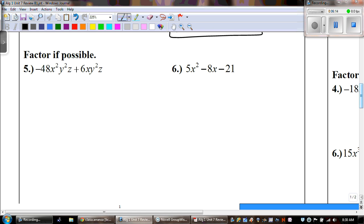Number 5 and 6. The directions say to factor if possible. So, let's first look at the numbers. Negative 48 and 6. Is there a number that goes into both of those? There is. It's 6. Now, the only thing that I have to watch out for is my leading coefficient is negative. Therefore, no matter what, my GCF is negative. So, I'm going to pull out a negative 6.